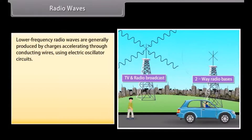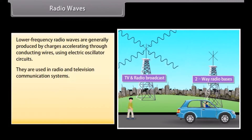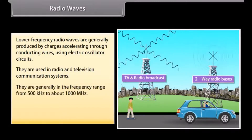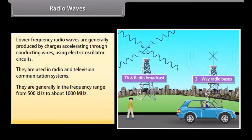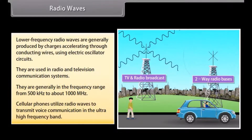Radio waves: lower frequency radio waves are generally produced by charges accelerating through conducting wires using electric oscillator circuits. They are used in radio and television communication systems, generally in the frequency range from 500 kilohertz to about 1000 megahertz. Cellular phones utilize radio waves to transmit voice communication in the ultra high frequency range.